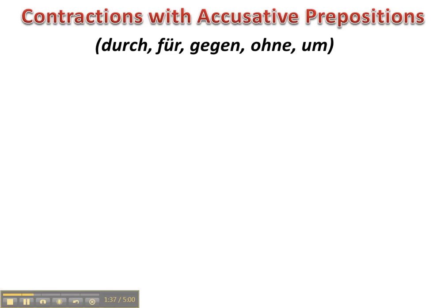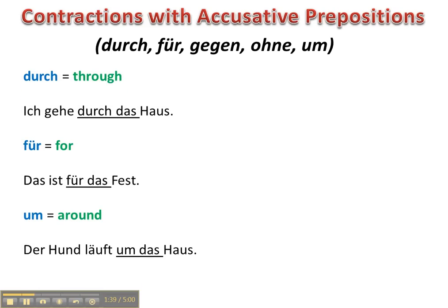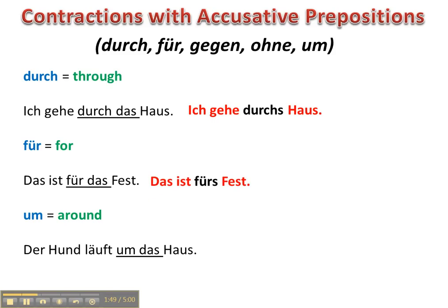First, accusative prepositions. Durch: Ich gehe durch das Haus → Ich gehe durchs Haus. I'm going through the house. Für: Das ist für das Fest → Das ist fürs Fest. That's for the festival. Um: Der Hund läuft um das Haus → Der Hund läuft ums Haus. The dog is running around the house.